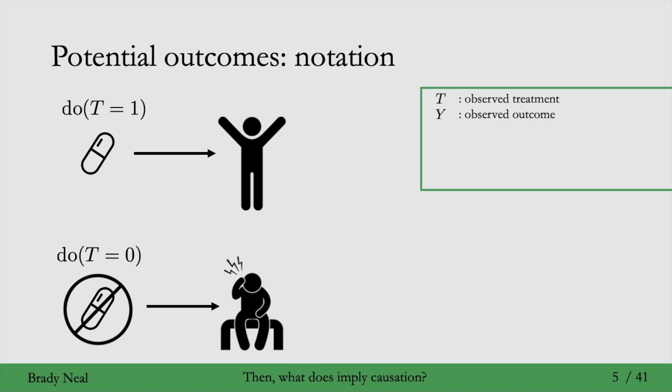We'll use T to denote the observed treatment and Y to denote the observed outcome. That's what we have on the right in this green box. We'll add more notation to this box as we get it. YI, the outcome for unit I, or me in this case, evaluated when I take the treatment, is what I have on the top right. YI evaluated when I don't take the treatment, T equals zero, is on the bottom right. I here is a subscript to denote a specific individual or unit.